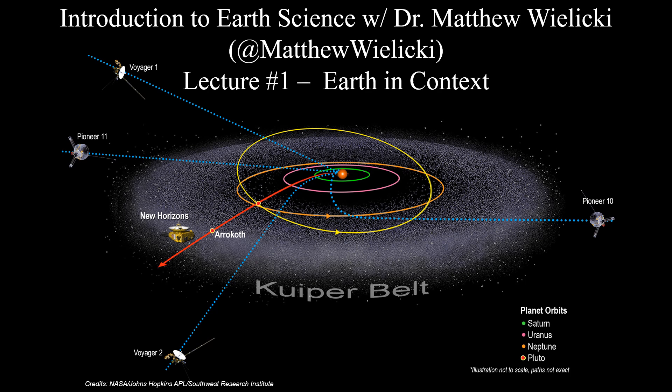We're going to start with this first lecture that I call "Earth in Context." We're going to start by taking a zoomed-out view of our planet, our solar system, and even the universe in general — because if we're going to start honing in on earth, it's good to know how the solar system came to be, how we think the universe came to be, and the elements inside it, before we start zooming in on earth.